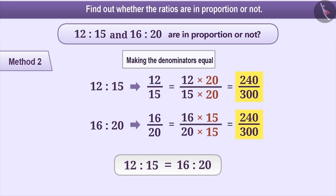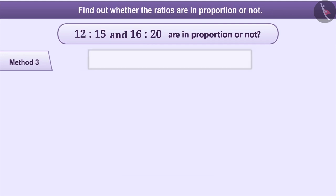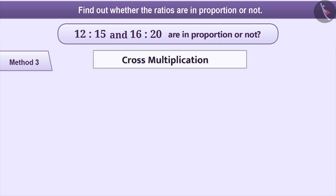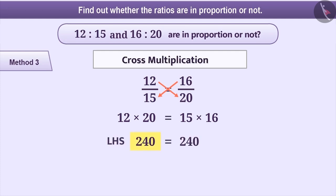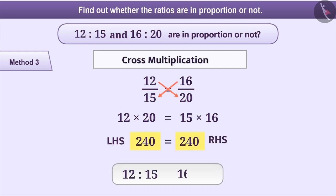Among all the methods, cross-multiplication is the most interesting method. In this method, we will express the two fractions and then cross-multiply them. That means the numerator of the first fraction is multiplied by the denominator of the second fraction, and the numerator of the second fraction is multiplied by the denominator of the first fraction. After multiplication, we get the LHS is equal to the RHS. Therefore, we can say that 12 is to 15 and 16 is to 20 are in proportion.